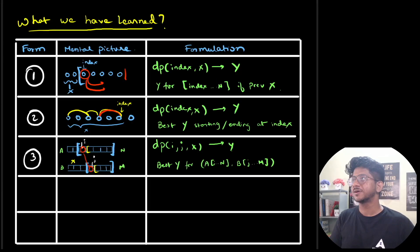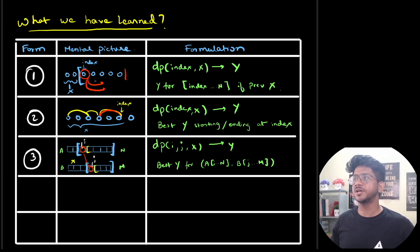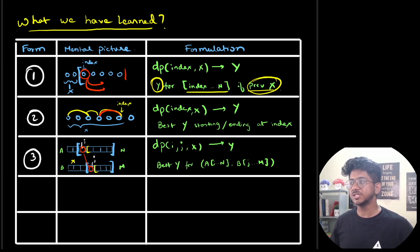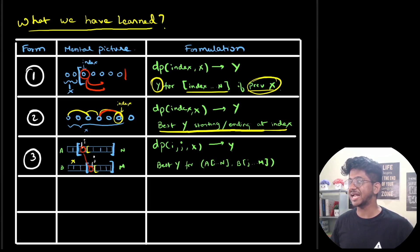Let's talk about the forms we have already learned. The first form is about the index, keeping choices on that, keeping some aggregate in the index till the end, finding out previous information X, finding out the answer Y — whatever is asked in the problem. In form two, we find out the best ending at Y — best Y ending at the current index.